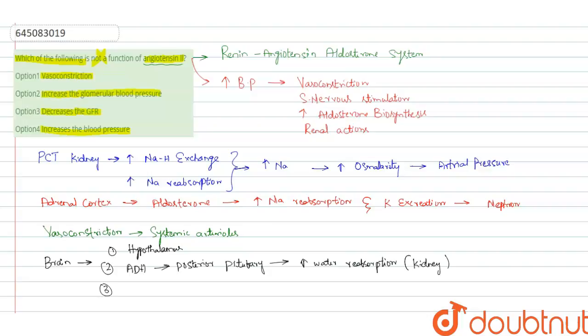Angiotensin 2 decreases the sensitivity of baroreceptor reflex.